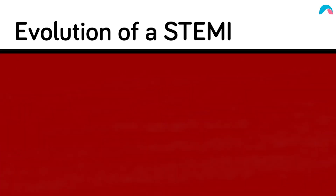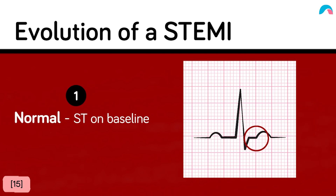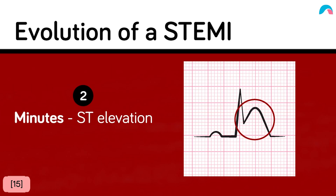Even though ischemia is the first thing that happens, it's not the first change that you will see on the ECG. On a normal ECG, the ST segment is on the baseline. As soon as a patient is experiencing a myocardial infarction, the ST segment will elevate within minutes. For this reason, you will not see the T wave inversion until much later, so the first sign you will see on your ECG is the ST elevation.